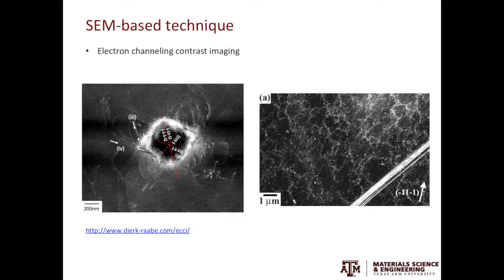In the example on the left, the ECI image shows the indent on the material and dislocations emanating from the indent. In the example on the right, I believe it's a heavily deformed metal and you can see those dislocation cell structures.